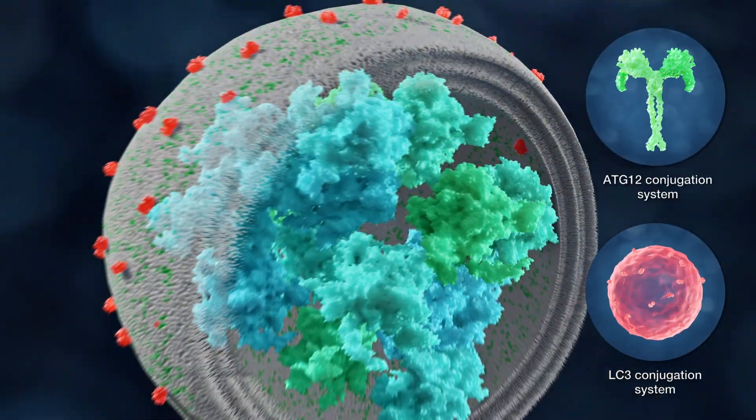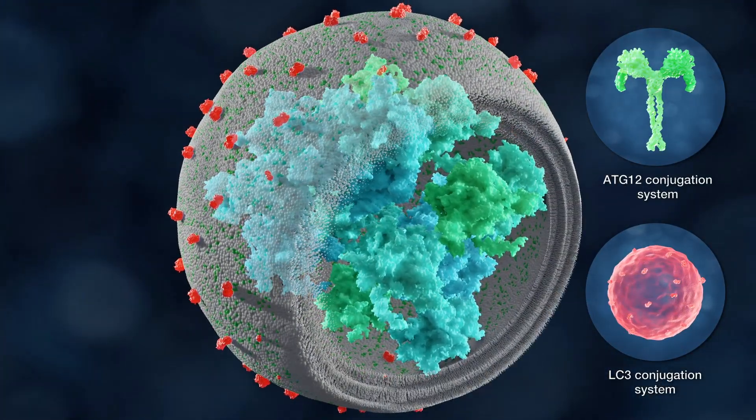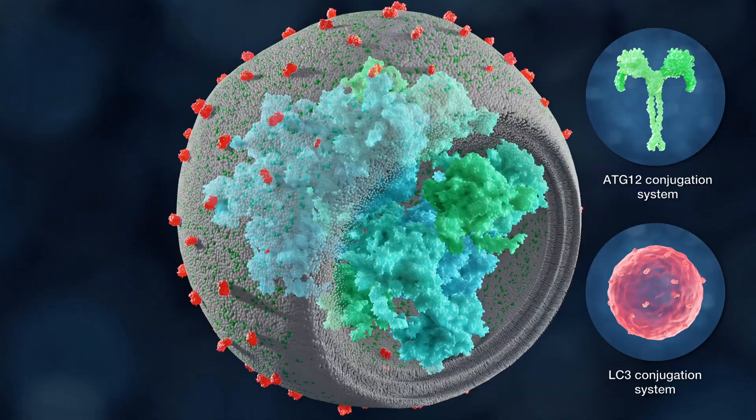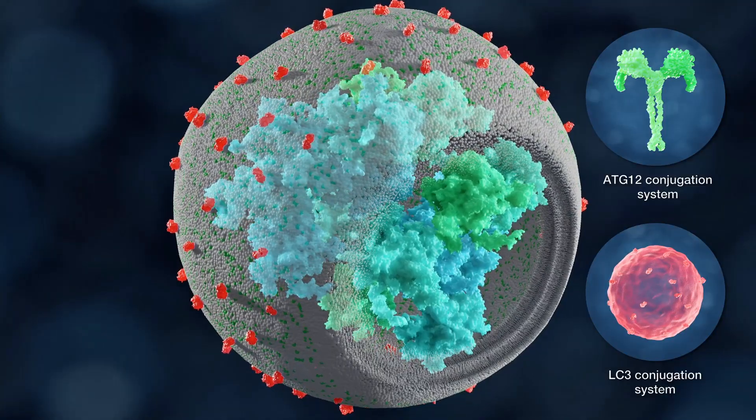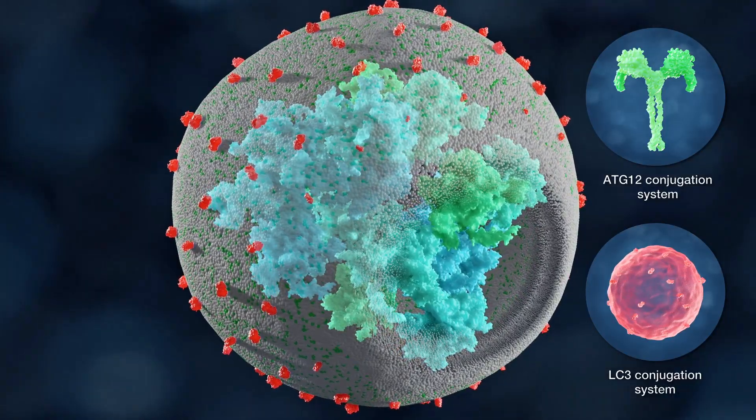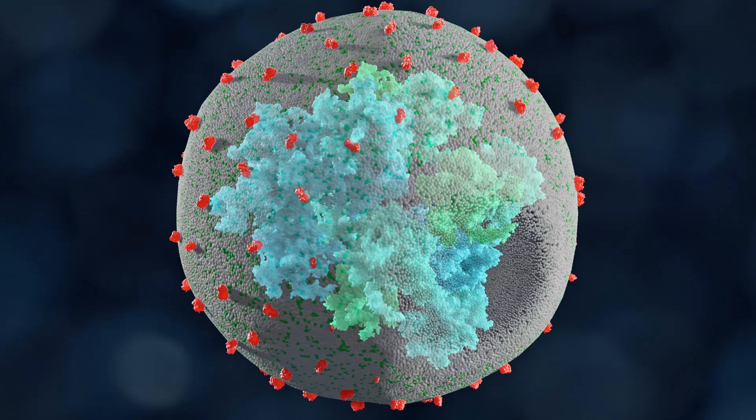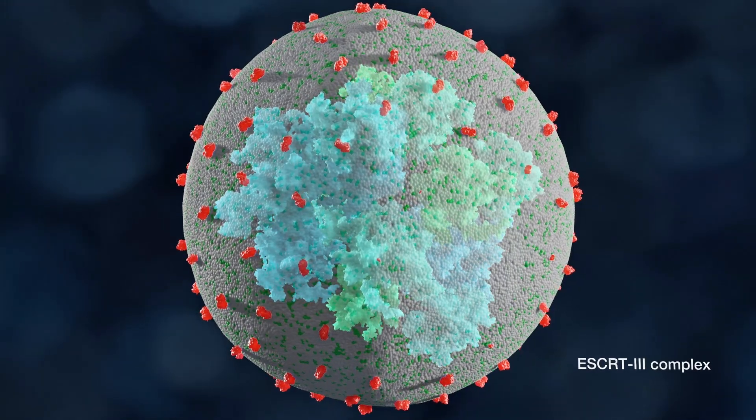The ATG12 and LC3 conjugation systems marginally participate in this process and are more crucial for the closure of the phagophore into an autophagosome and its subsequent transport and fusion. Phagophore closure appears to also require the Escort-3 complex.